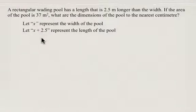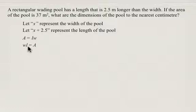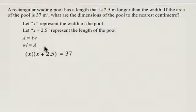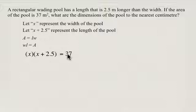We need to remember the formula for area of a rectangle: area is equal to length times width. So substituting in, width is x, length is x plus 2.5, and the area is equal to 37. So we have x times (x plus 2.5) equals 37.